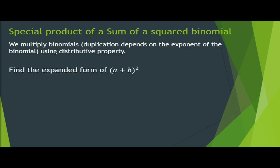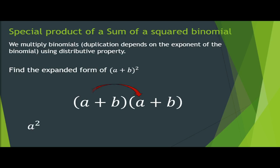Find the expanded form of (a + b) raised to the power of 2. Since the given binomial has the exponent of 2, you have to multiply the binomial by itself twice. Now we have (a + b) times (a + b). The first process is to multiply the first terms, which is a times a is equal to a squared. Then multiply the outer terms, which is a times b is equal to positive ab.